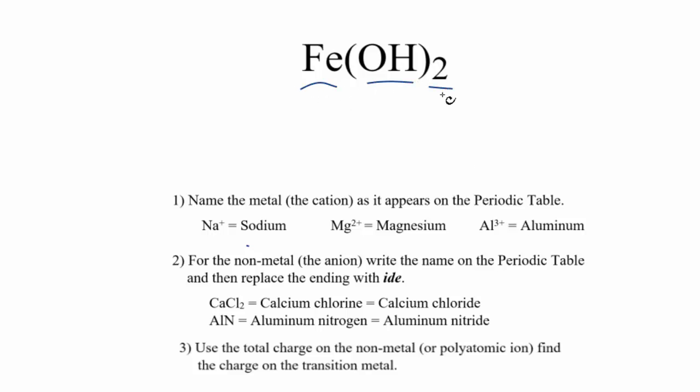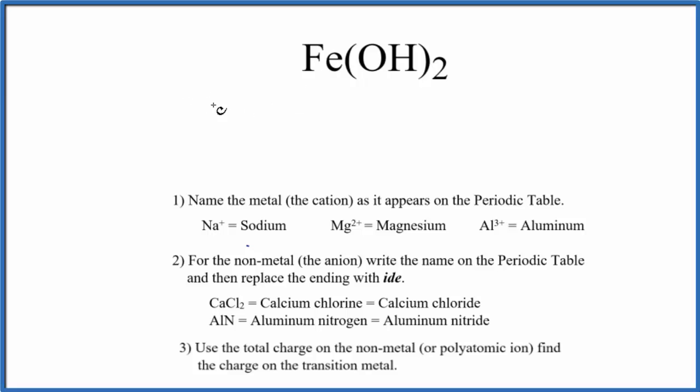To write the name for Fe(OH)2, we'll use these rules here. So the first rule is we write the name for the metal as it appears on the periodic table. That's iron, so Fe is iron, we write iron.